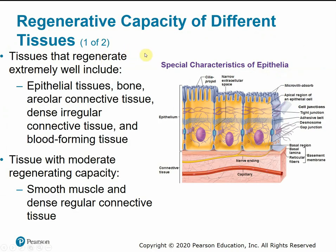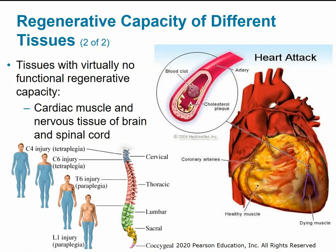Different tissue types have different regenerative capabilities. Tissues that regenerate very well include epithelial tissue, bone, loose areolar connective tissue, and some bone-forming tissue in the marrow. Tissues with moderate regenerative capacity include smooth muscle and dense regular connective tissue. Cardiac muscle and nervous tissue have virtually no functional regenerative capacity, so damage is more likely to be permanent. For example, spinal cord injuries leading to paralysis are permanent conditions that will not regenerate. Similarly, if someone has a heart attack and heart muscle cells die, they are replaced with scar tissue, which cannot contract like muscle tissue, meaning the original function of the heart is lost.